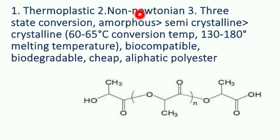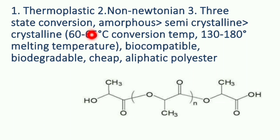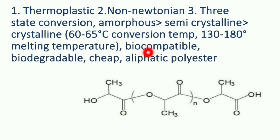Next, there can be three state conversions — from amorphous to semi-crystalline to highly crystalline. This change takes place at 60 to 65 degrees centigrade, and its melting point is 130 to 180 degrees centigrade. It is also biocompatible, biodegradable, and cheap. Due to these three basic properties, polylactic acid is widely used in industry.